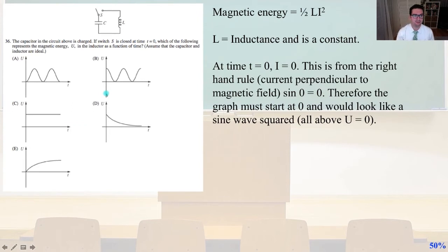Number 36. The capacitor in the circuit above is charged. If switch S is closed at time T equals 0, which of the following represents the magnetic energy U in the inductor as a function of time, assume the capacitor and inductor are ideal? So the magnetic energy equals 1 half times Li squared, where L is the inductance, and it is a constant.